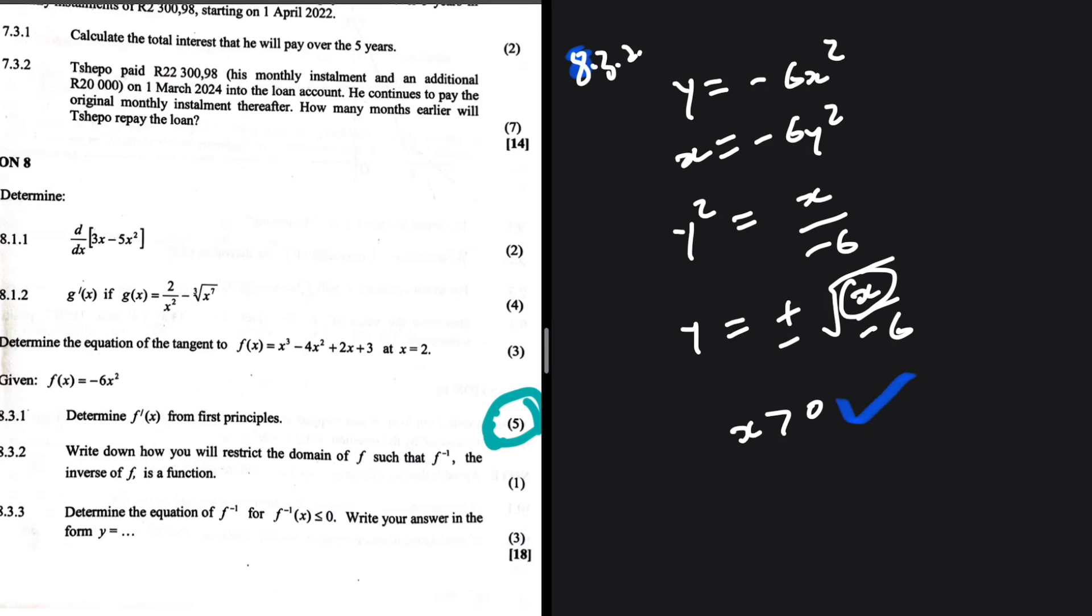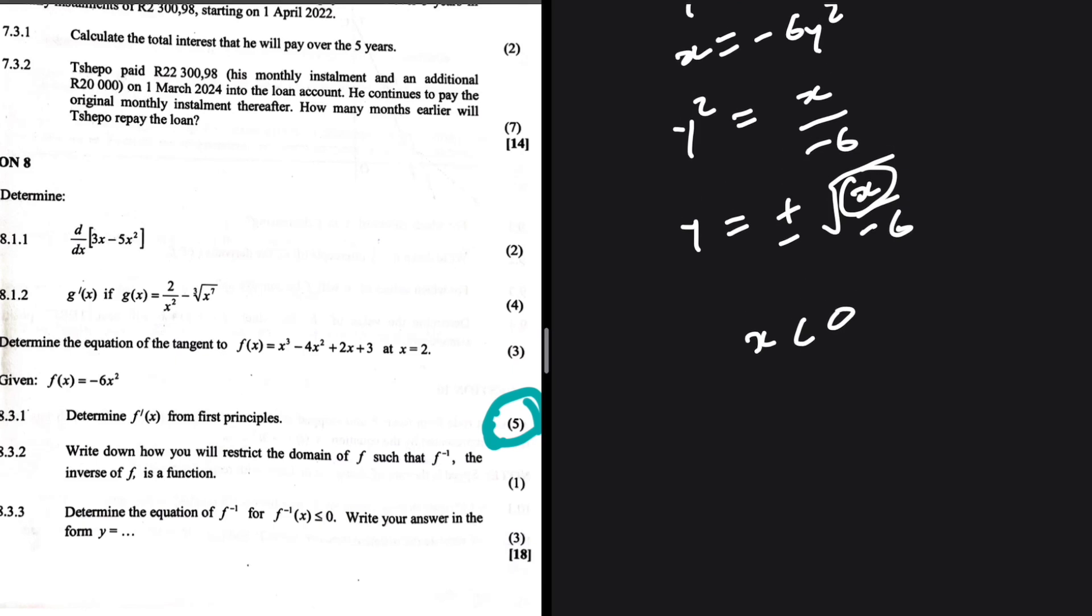Because if x is positive, it's not going to be defined because we cannot take the square root of a negative number. So we need x to be positive here. We need x to be greater than 0. So this is the restriction we can impose. We need x to be greater than 0. Because when x is greater than 0, the square root is going to be defined. If it is 0, it is undefined. If it is negative, it is.